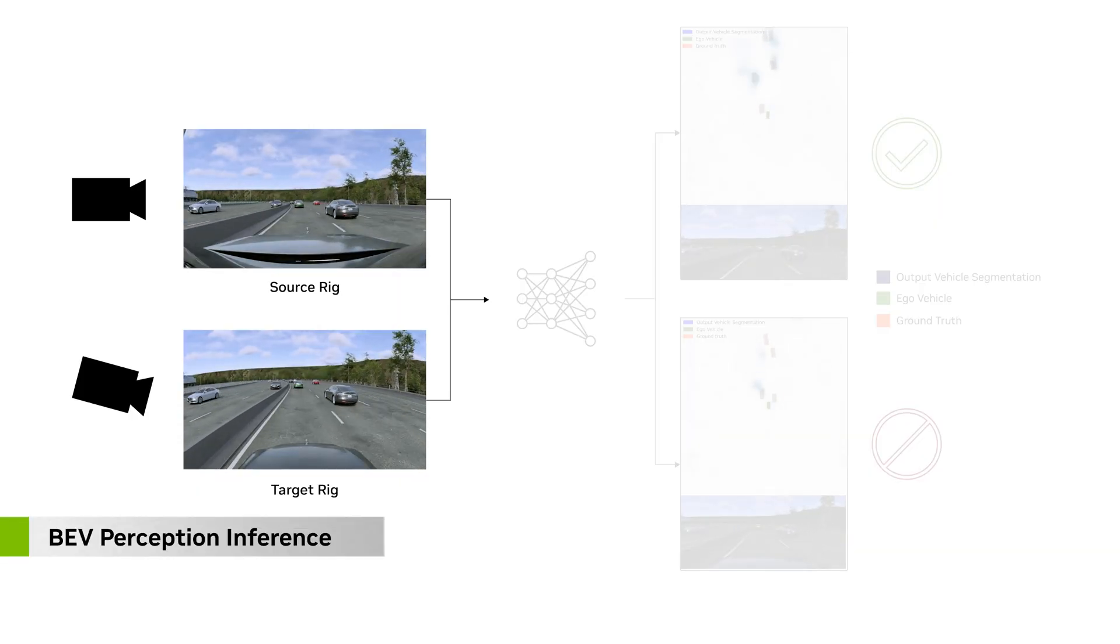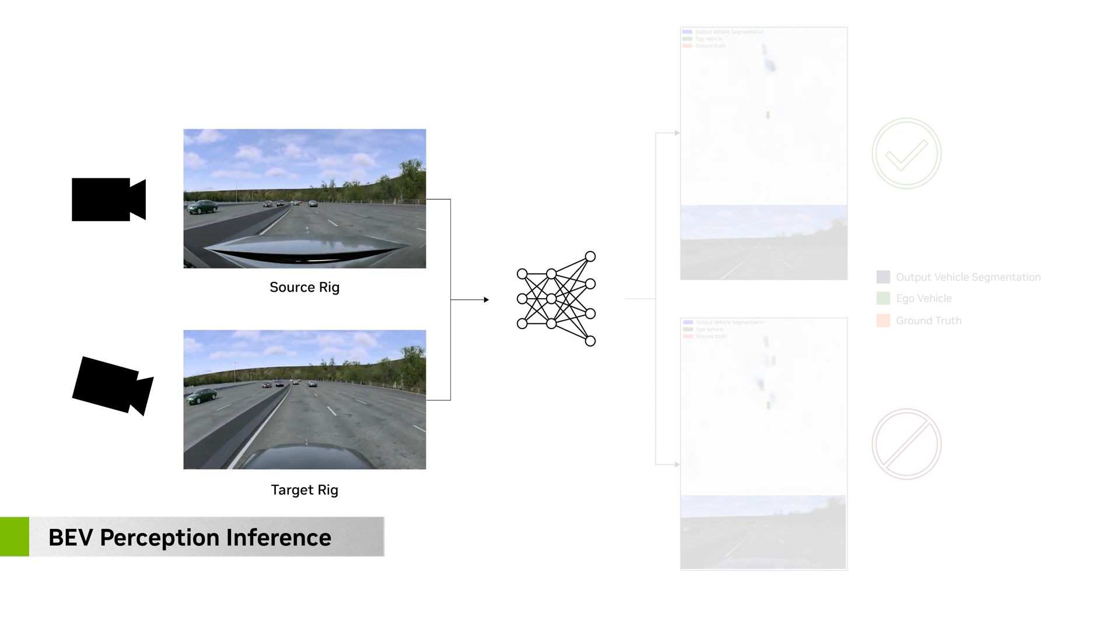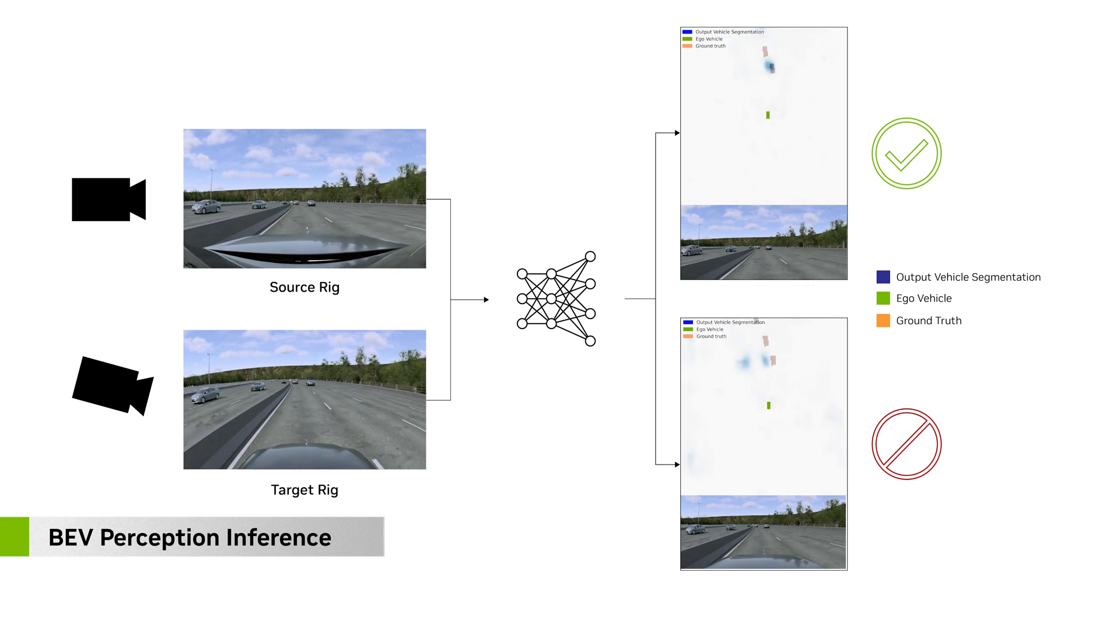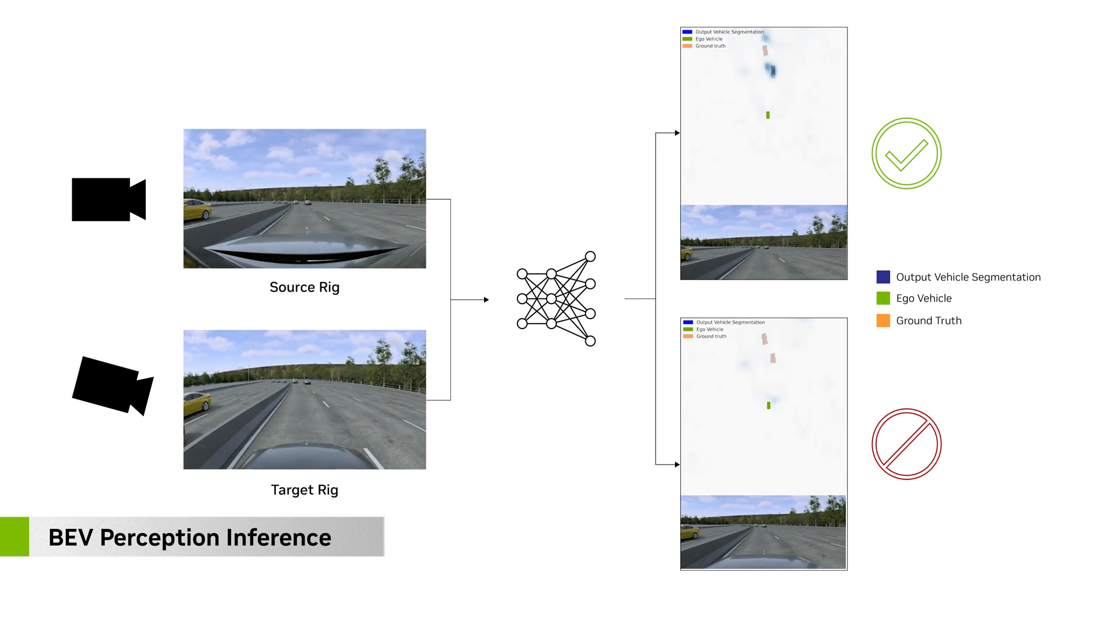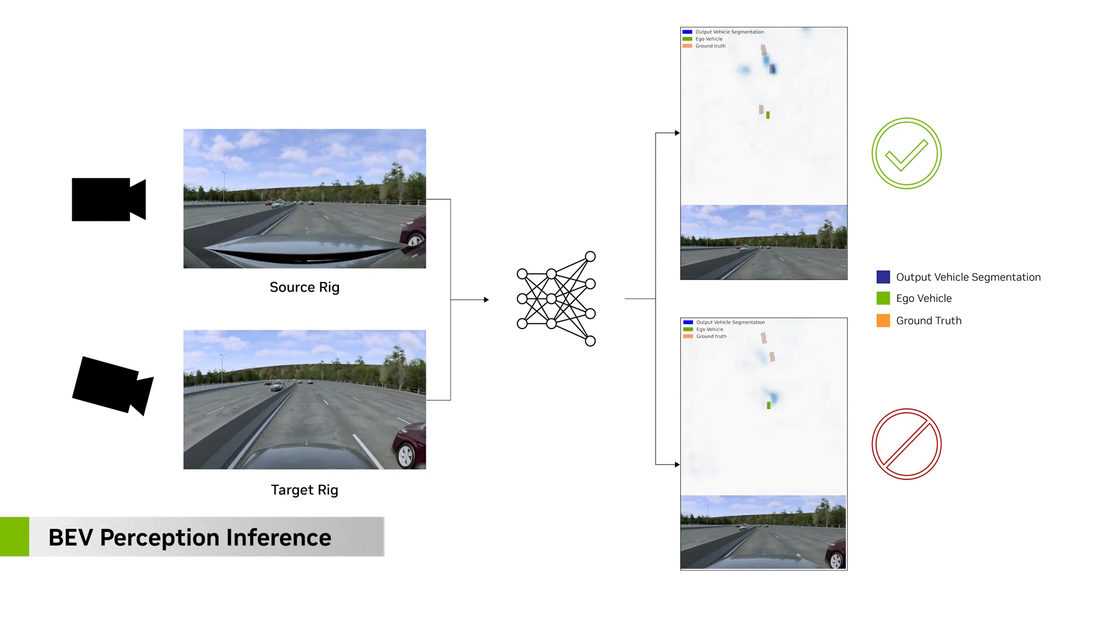However, the viewpoint of cameras on an AV can vary between vehicles of different sizes. Even small variations in camera pitch, height, and depth can result in lower DNN accuracy if it has not been trained with data from these viewpoints.